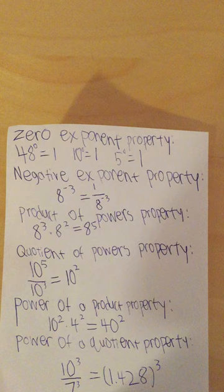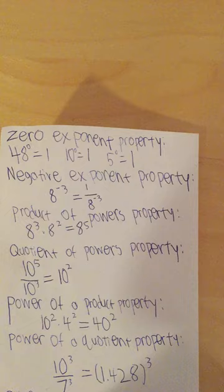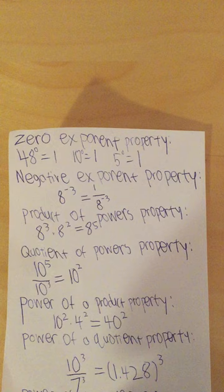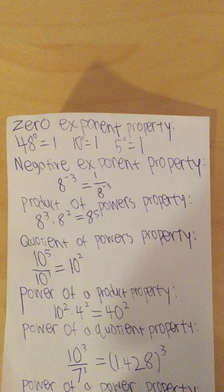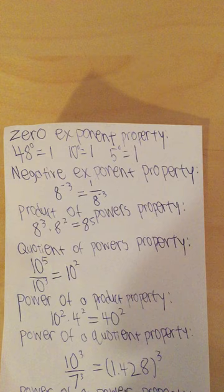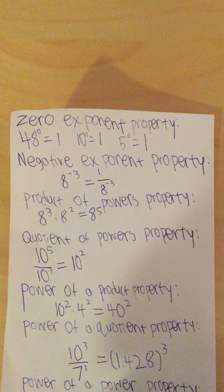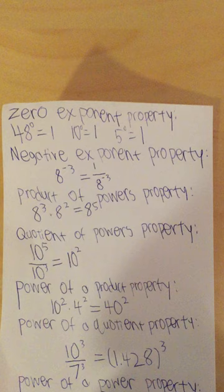That one's pretty self-explanatory, so I'm moving on to the negative exponent property. Now this property is mostly to turn the exponent positive to make it easier to solve an equation. To do this, you must turn it into a fraction, so instead of 8 to the negative third power, you would have 1 over 8 to the third power. Benefits of this are, well, negative exponents are just not fun to deal with as much as a positive one.